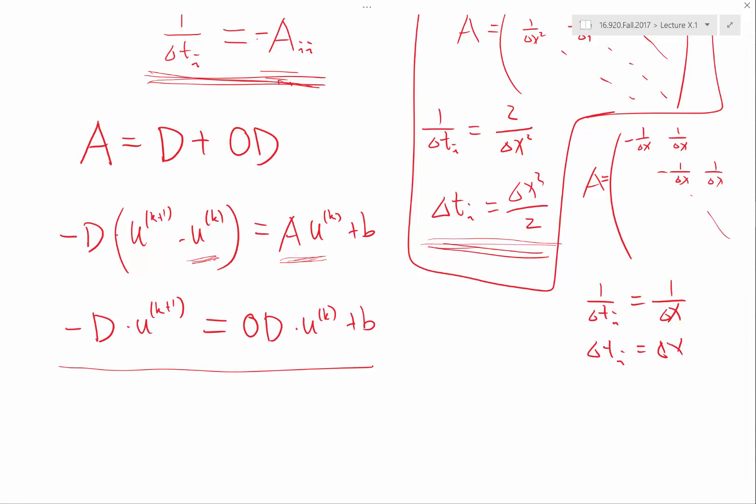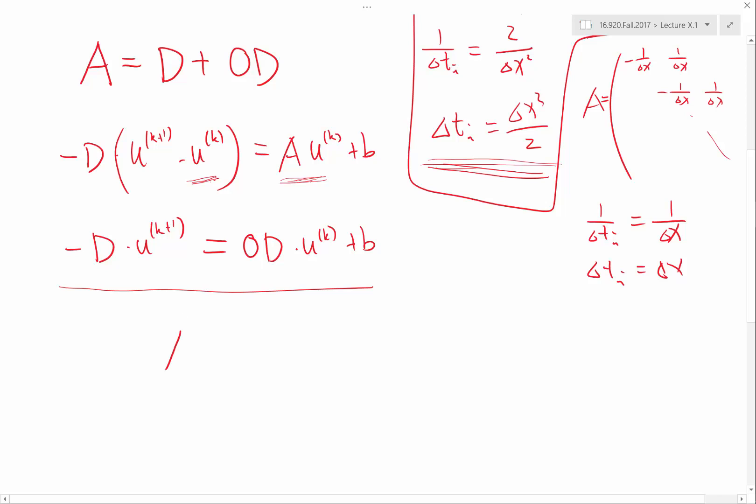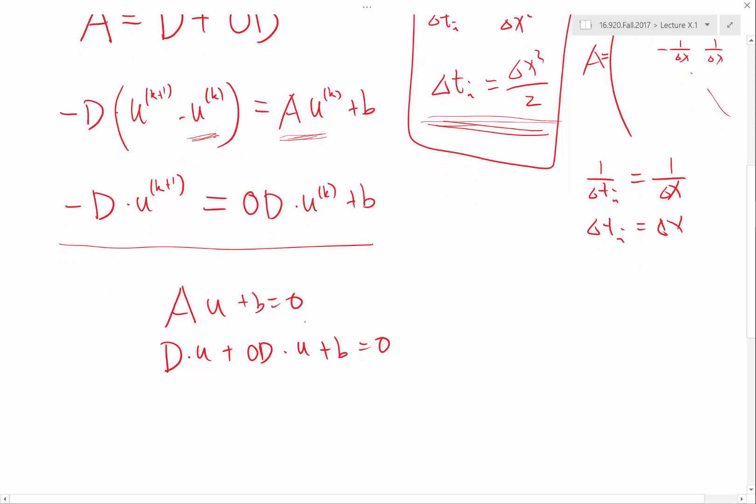It's almost saying that another way to derive it is I have a u plus b equal to 0. And I decompose a into d plus od. So I have d times u plus od times u plus b is equal to 0. And I just assign an index k to here and assign an index k plus 1 over here. And just iterate until u k and u k plus 1 are equal. Then I solved the system.